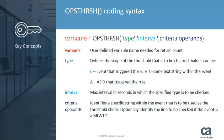An E value indicates the threshold is checked against the event ID that triggered the rule. An A value checks against the ACID that triggered the rule. And a C value indicates that the threshold is based on some unique text string within the triggering event.